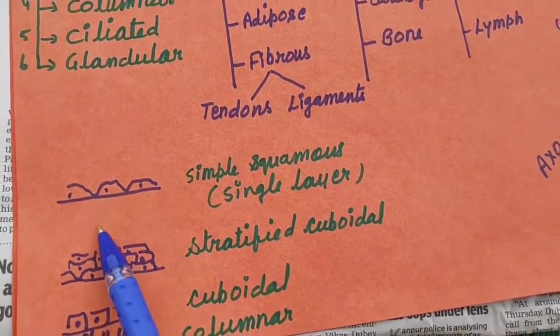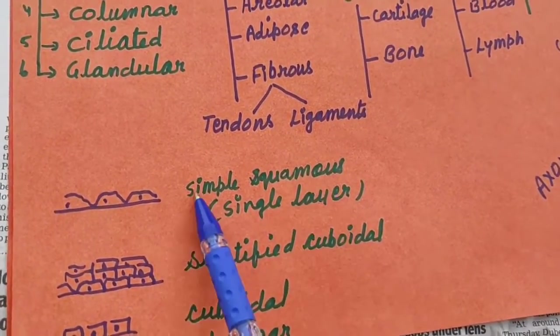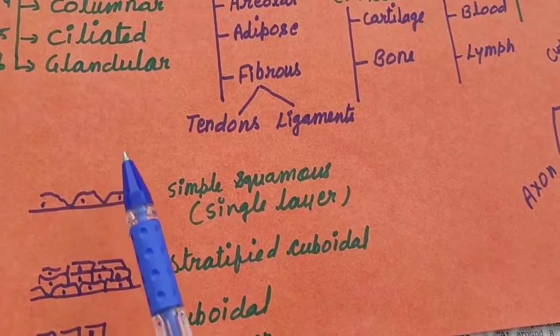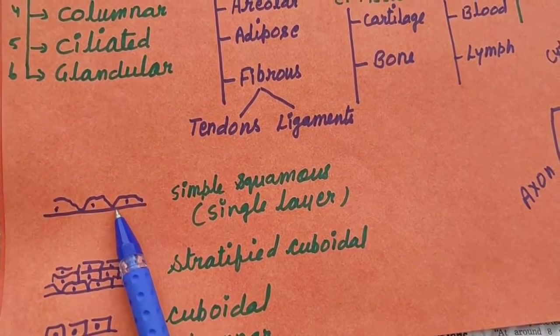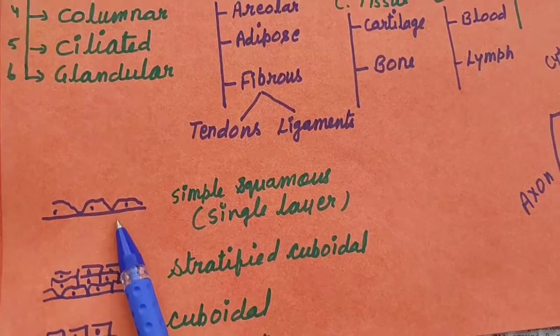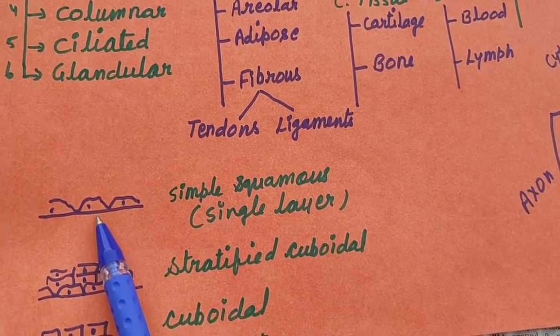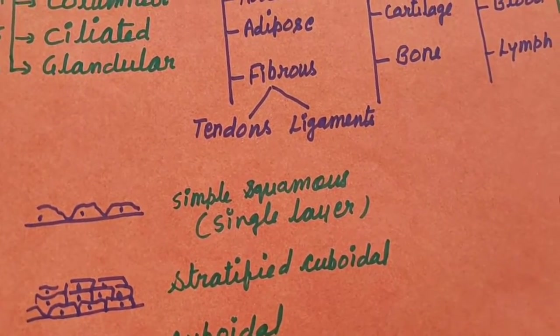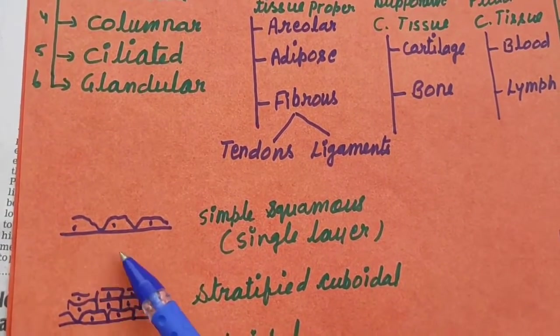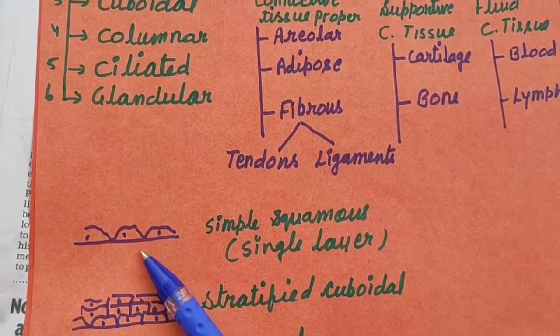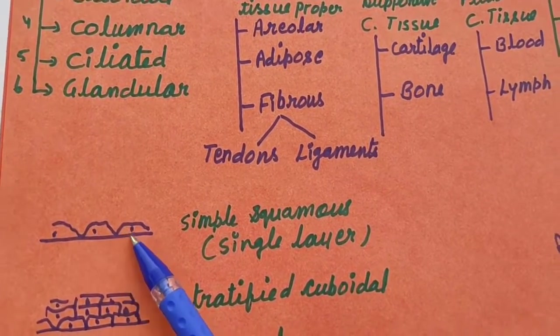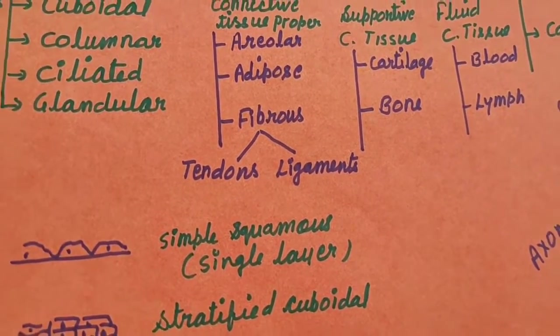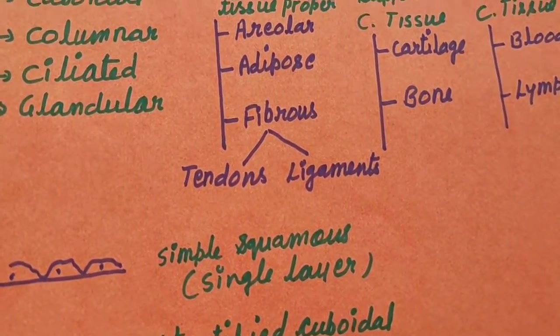See the diagram of squamous, simple squamous epithelial cells. Single layer. They are composed of cells which are thin and irregular in shapes and having single layer. And cells in the outermost layer of our skin and in the lining of mouth and nasal cavities are made up of simple squamous epithelial cells.